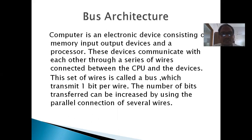The computer is an electronic device that consists of input-output devices, a processor, and memory. These devices communicate with each other through wires connected between the CPU and the devices. This set of wires is called the bus, and through this bus, data is transmitted.